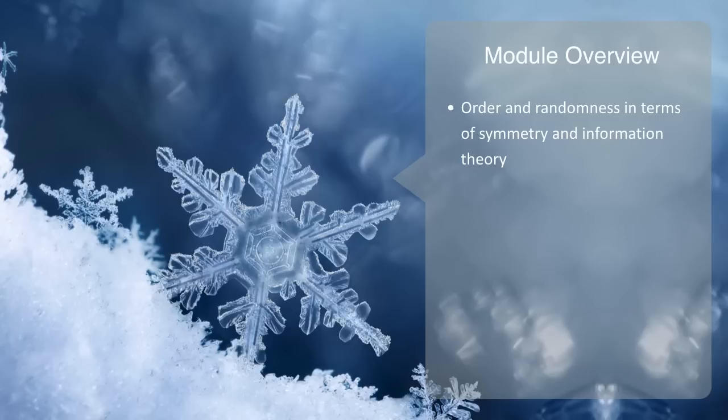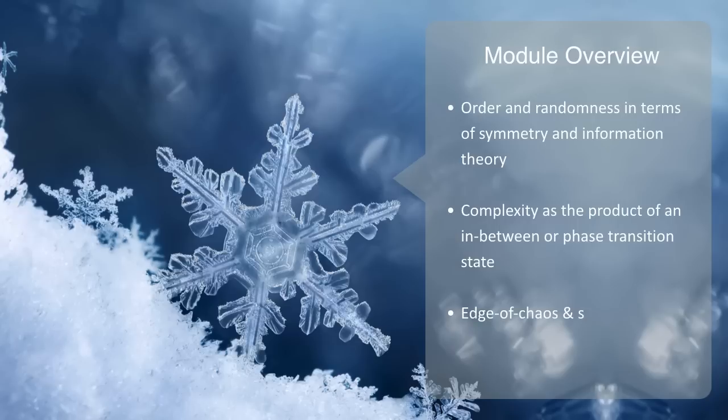We will then talk about complexity as the product of an in-between or phase transition state. And finally, we will discuss the term edge-of-chaos and talk about how self-organization is thought to be dependent upon noise and random fluctuations in order to stay generating variety.